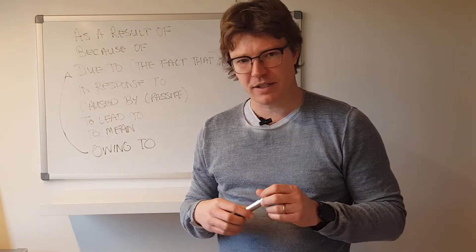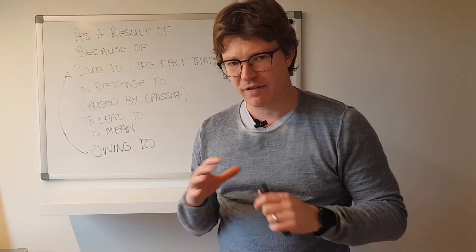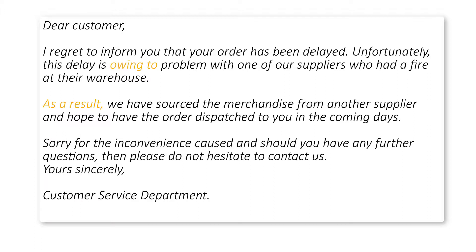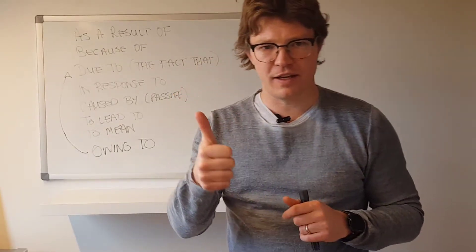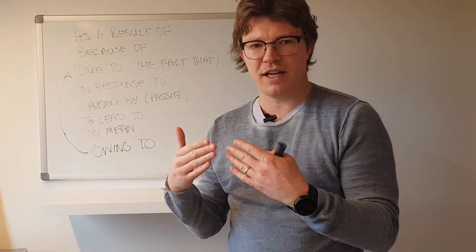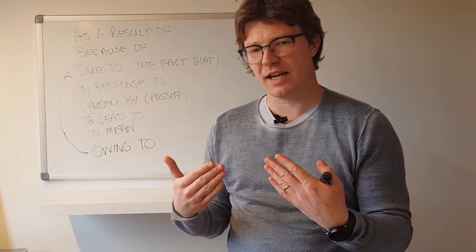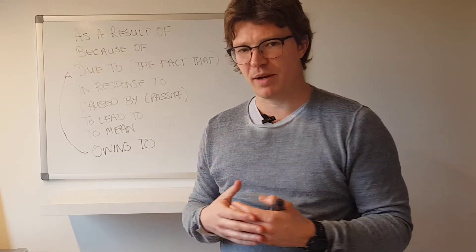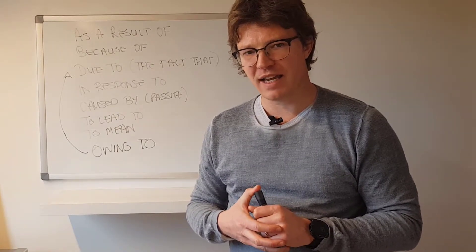Here's a sample email to show how these work: 'Dear customer, I regret to inform you that your order has been delayed. Unfortunately, this delay is owing to a problem with one of our suppliers, who had a fire at their warehouse. As a result, we have sourced the merchandise from another supplier and hope to have the order dispatched to you in the coming days. Sorry for the inconvenience caused. Should you have any further questions, please do not hesitate to contact us. Yours sincerely, Customer Service Department.' You can see I've used 'owing to' and 'as a result,' giving information and reasons for what occurred.